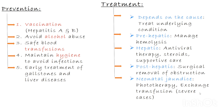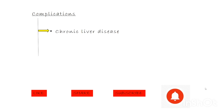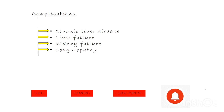In all cases, supportive care is important. This includes maintaining good hydration, avoiding substances that can further harm the liver such as alcohol and certain drugs, and ensuring proper nutrition. If treatment is not done properly, complications can arise such as chronic liver disease, liver failure, kidney failure, coagulopathy, and brain damage in neonates.